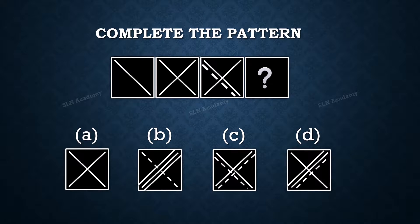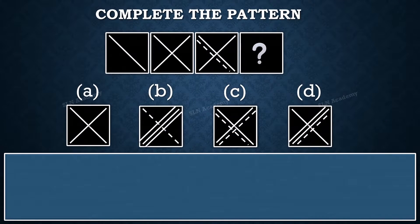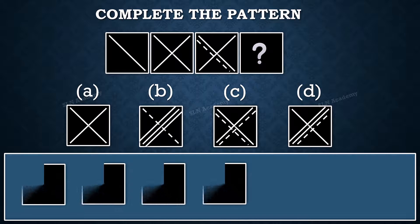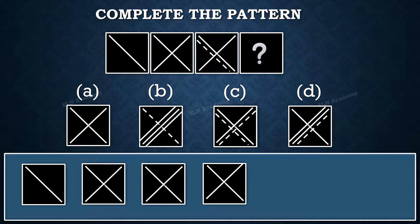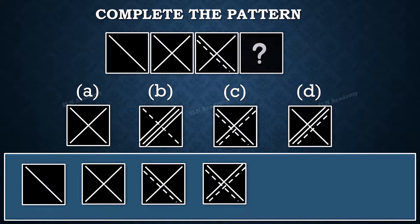To solve this, let us first observe how many lines are present in each square. In each square, a new line is added. Newly added lines are continuing in the rest of the squares as well. And the answer is option C.